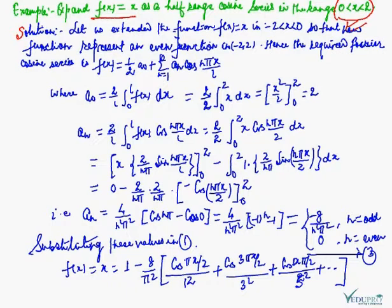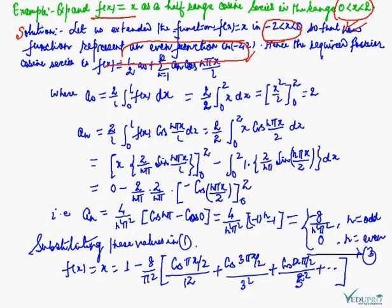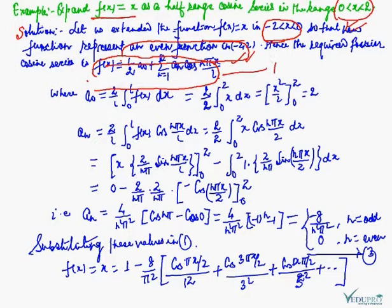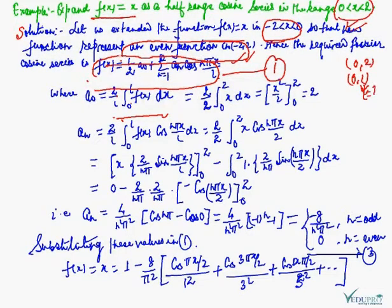To solve it, we extend the function f(x) = x in minus 2 to 0 in such a fashion that the extended function represents an even function in minus 2 to 2. Since the given function is even, the Fourier cosine series is f(x) = (a₀/2) + summation n=1 to infinity of aₙ cos(nπx/l). Comparing the interval 0 to 2 with 0 to l, we have l = 2.